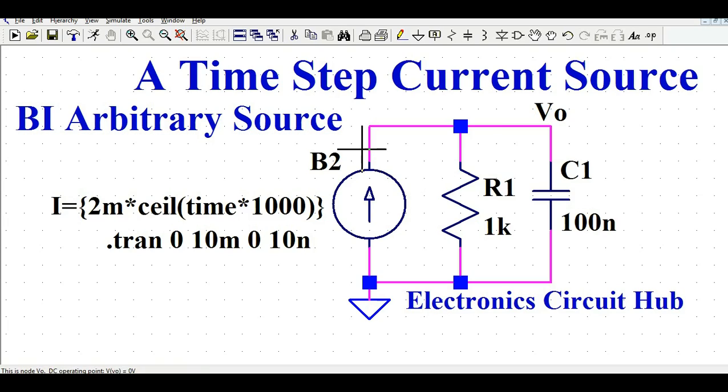So at time t equals 1, your current would be 4 milliampere, and at time t equals 3 millisecond, your current would be 6 milliampere. That is how you can generate a step function by using this BI arbitrary current source here and writing some mathematical function here.